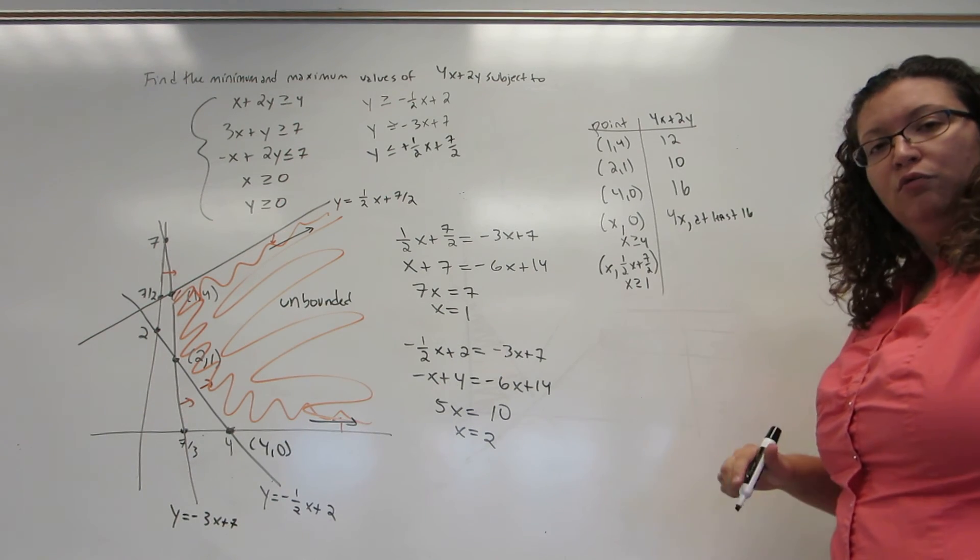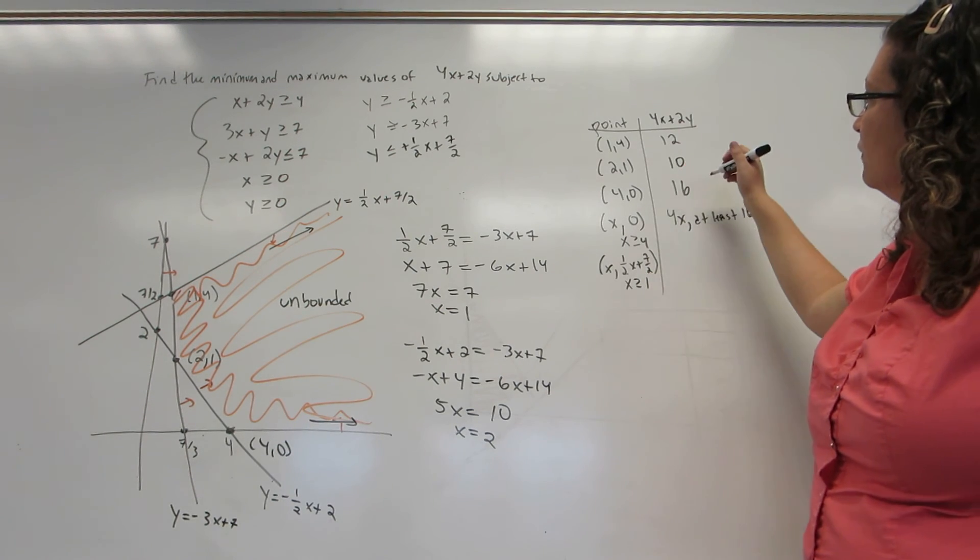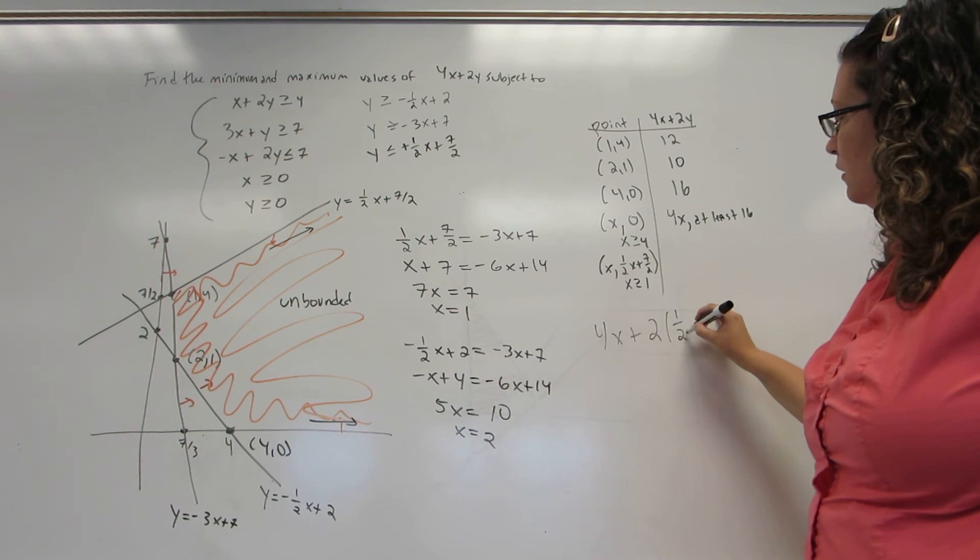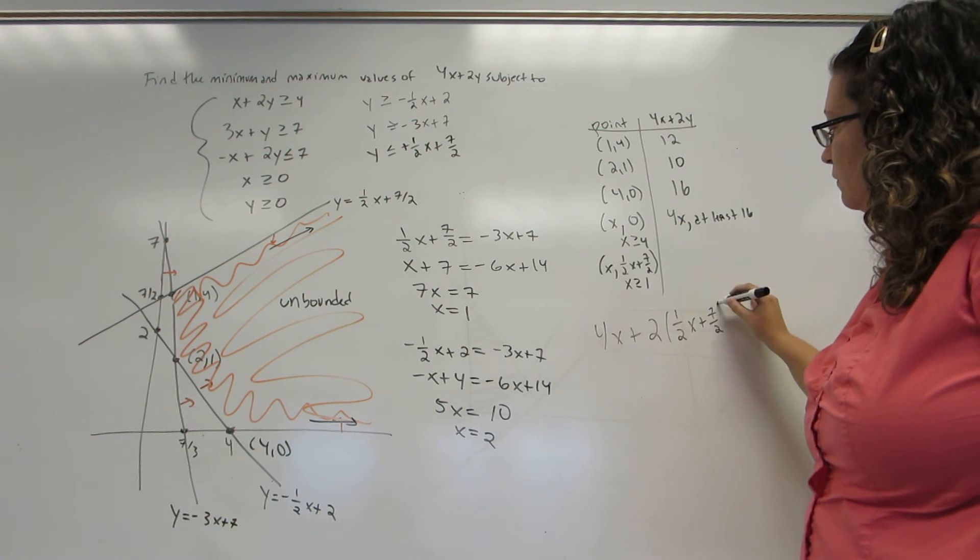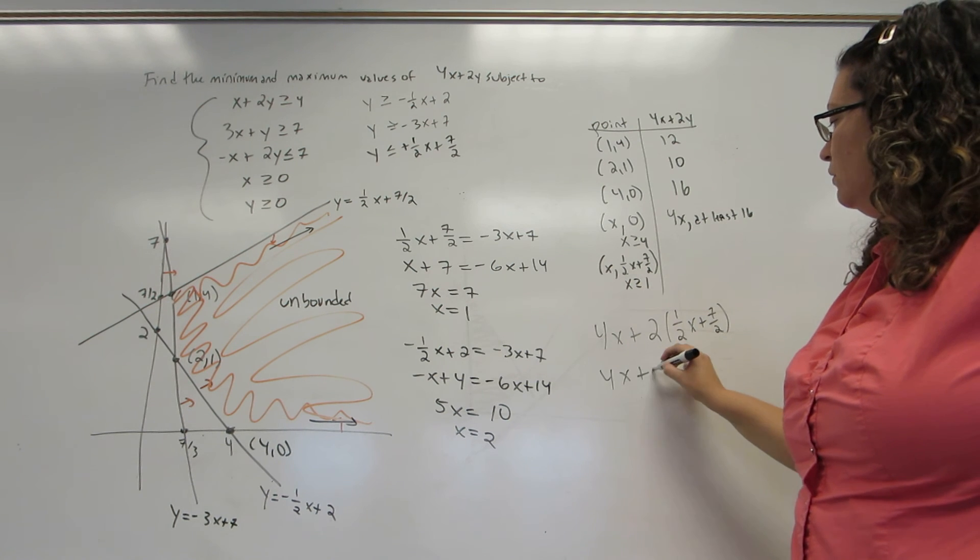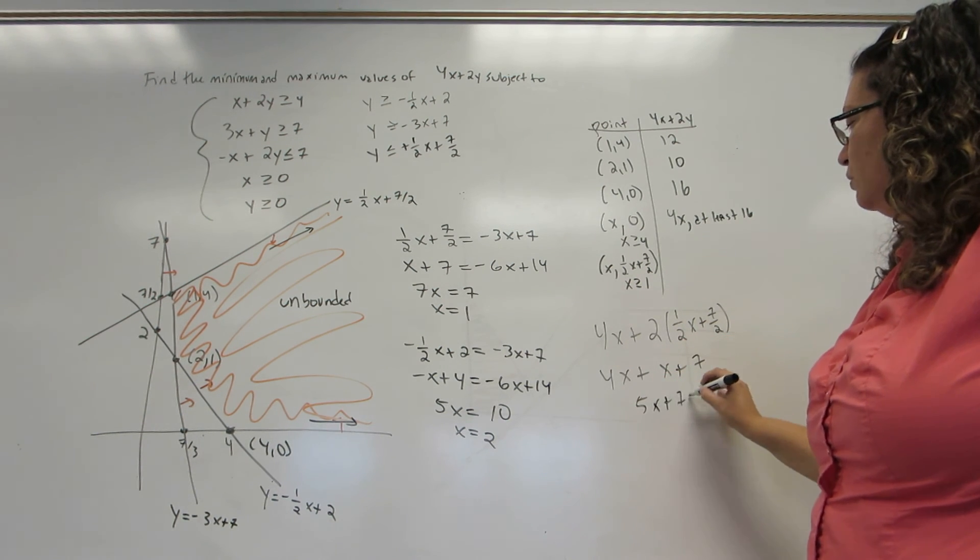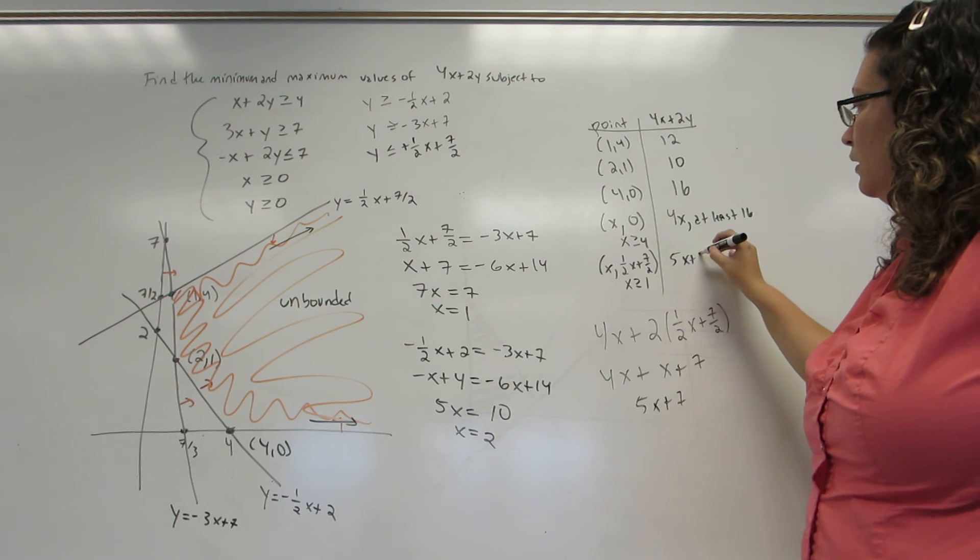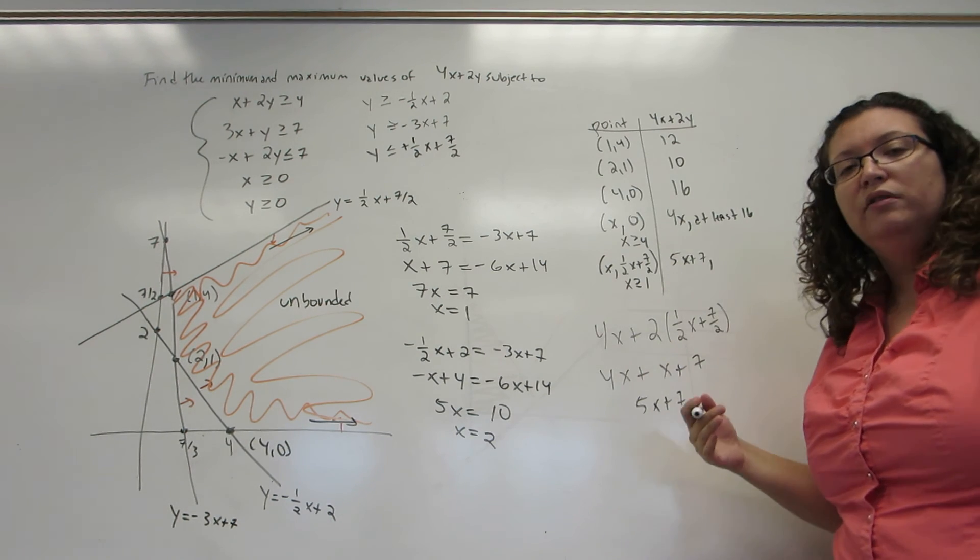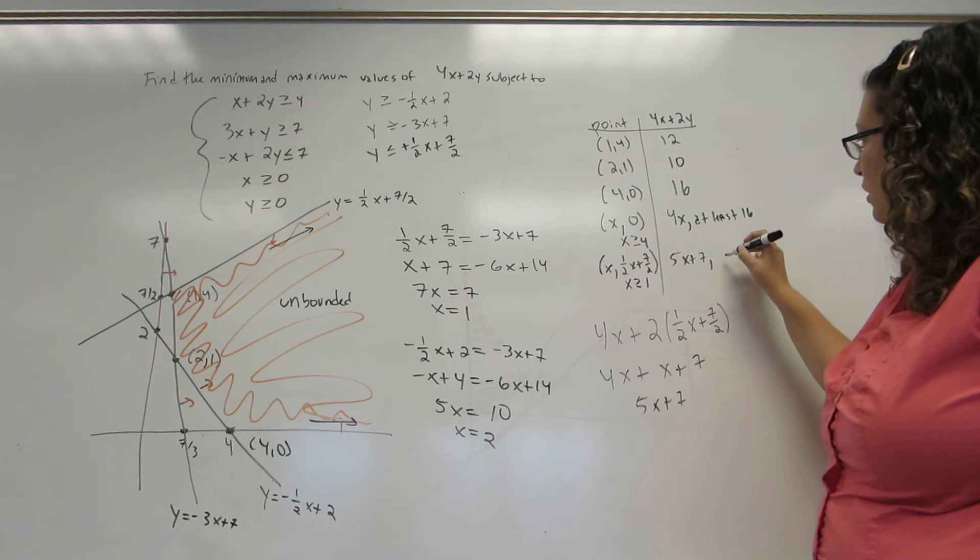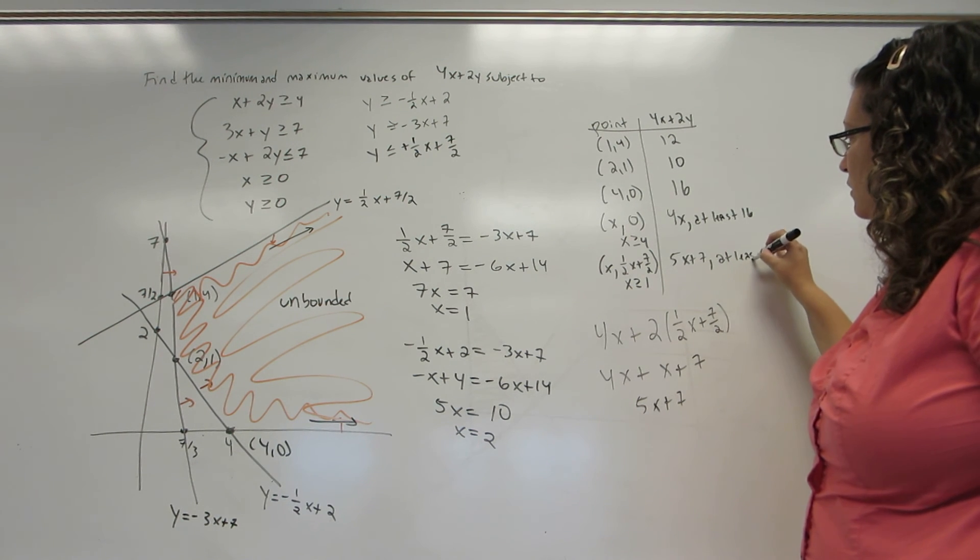This one is a little bit more work. I'm going to take a little bit of an aside for that. I'm going to get 4X plus twice a half X plus 7 halves, which is 4X plus X plus 7 or 5X plus 7. Again, I see what's the smallest this value could be. Well, I'm only allowed to plug in numbers bigger than or equal to 1, so this is at least 12.